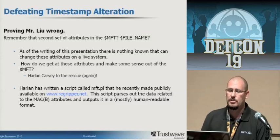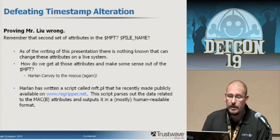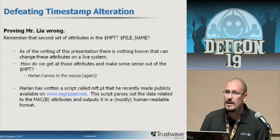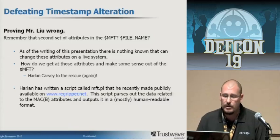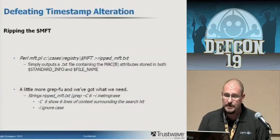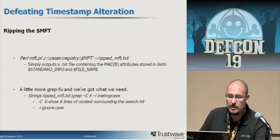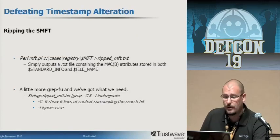To make sense of the MFT — since it's a disaster in raw format — Harlan Carvey has written a script called MFT.pl, available on regripper.net. It parses out all the data from both sets of file stamps and dumps it into a human-readable format. It's fast. You rip the MFT with: perl mft.pl [path to master file table] > output.txt. It outputs a text file containing all the attributes stored in both the standard info and file name attributes, easily searchable.